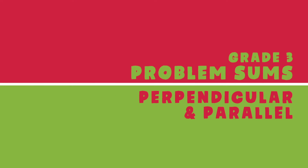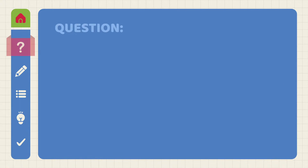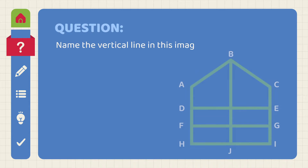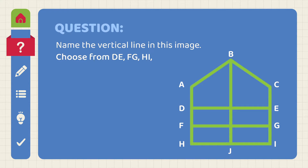Problem Sums: Perpendicular and Parallel. Name the vertical line in this image. Choose from DE, FG, HI, or BJ.